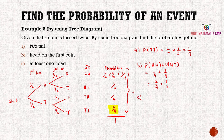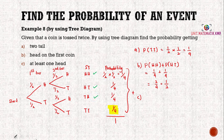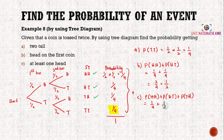For part c, at least one head means we can have HH, HT, or TH — TT is excluded because it has no head. So the probability is one over four plus one over four plus one over four, which equals three over four.